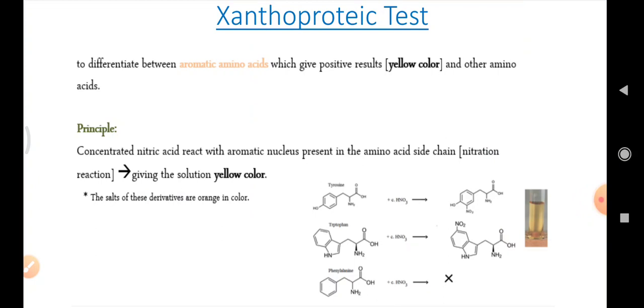The aromatic amino acids will produce yellow color and the other amino acids do not. What is the principle for xanthoprotic test? The concentrated nitric acid react with the aromatic nucleus present in the amino acid side chain and the nitration reaction will take place which gives the solution a yellow color. The point to be noted is that the salts of these derivatives are orange in color.